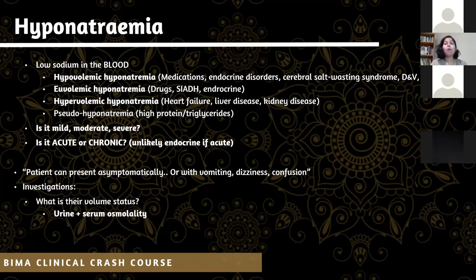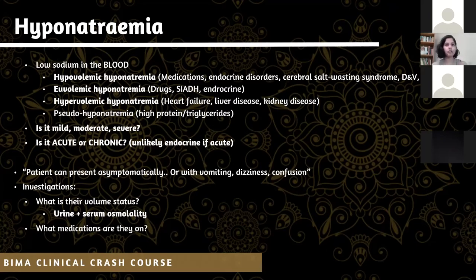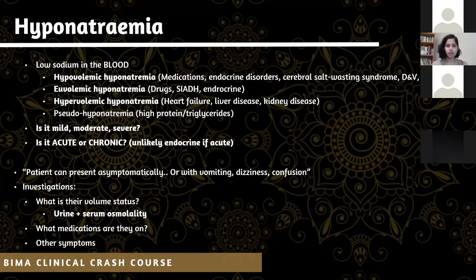You also do a urine and serum osmolality. In clinical practice, many of us forget to check the drug chart and start treating hyponatremia when actually something as simple as crossing off a drug can really help. Then ask about other symptoms — generally with endocrine pathology you'll have a whole host of other symptoms that contribute to the picture.